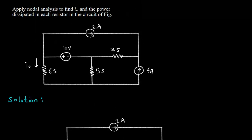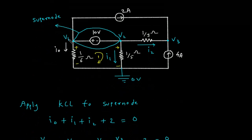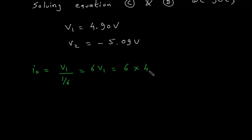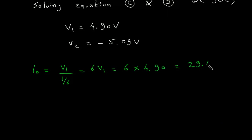What we have to find? We have to find IO. So IO is equal to V1 minus 0 divided by 1/6, which equals 6V1. So IO equals 6 times 4.90, which gives IO equal to 29.4 A.